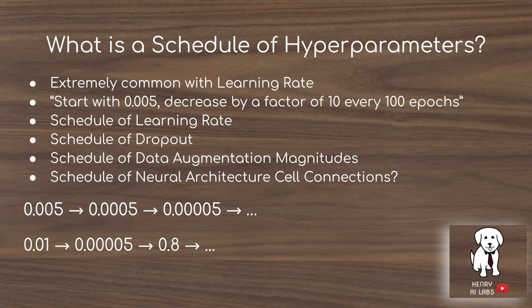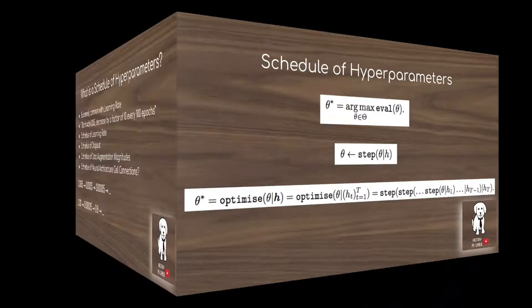Let's start with what is a schedule of hyperparameters. This is extremely common with learning rate, used almost ubiquitously in every application. You would start with some learning rate value and then decrease it by a fixed factor, or use learning rate cycling or some kind of annealing technique. You can think of scheduling learning rate, scheduling dropout, and data augmentation magnitudes of different augmentations — and not yet explored, but architecture cell connections could also have a scheduled connection, which would be a really interesting area of future research.